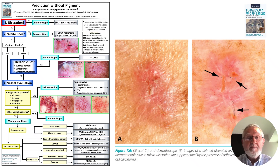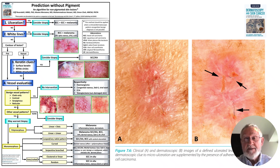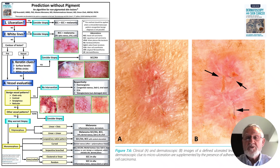The first step of the four steps in this method is ulceration. If you have a lesion of concern — that is, you cannot allocate it to one of those five benign categories — and it is ulcerated, with ulceration not due to obvious trauma, then you should excise it. Here is an example from the book Dermatoscopy and Skin Cancer of a basal cell carcinoma where you can see the ulceration in both the close-up view and the dermatoscopic view, and also a dermatoscopic clue: adherent fibre, because clothing fibres and other fibres can adhere to the sticky secretions of the ulceration.